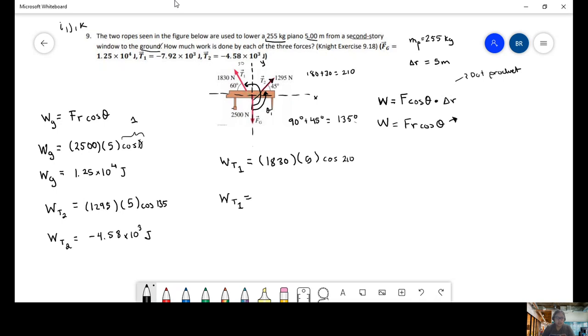So, we also get a negative number. We get negative 7.92 times 10 to the 3 joules.